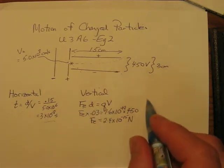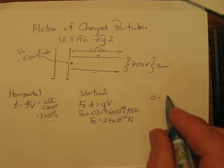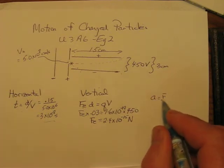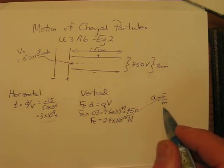Once you have the force, that allows you to calculate the vertical acceleration, which is force over mass. We would take this value, put it into here, divide by the mass of an electron, which you can look up. It's 9.11 times 10 to the negative 31.